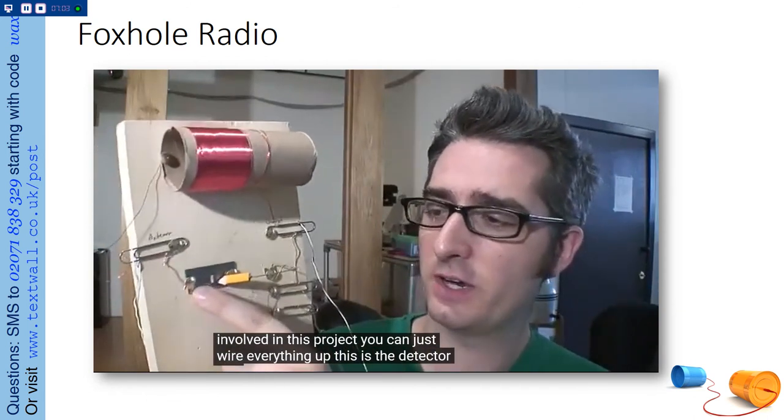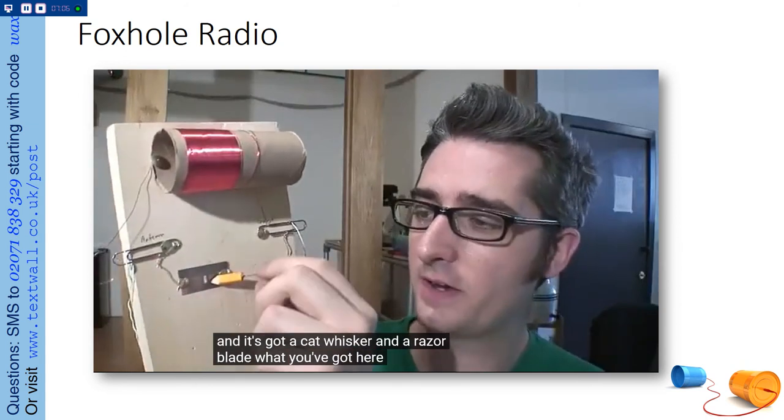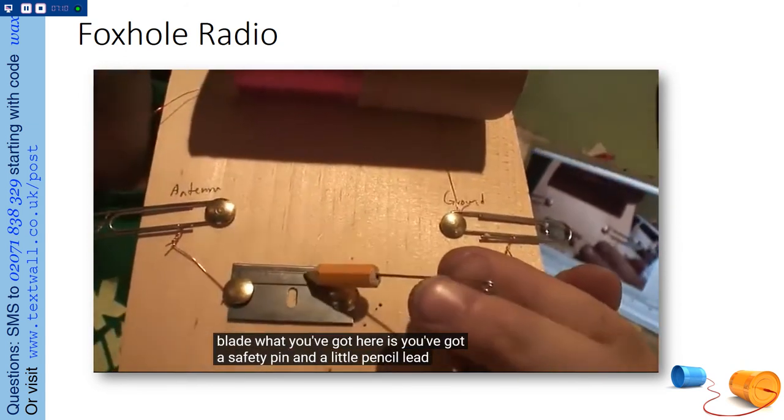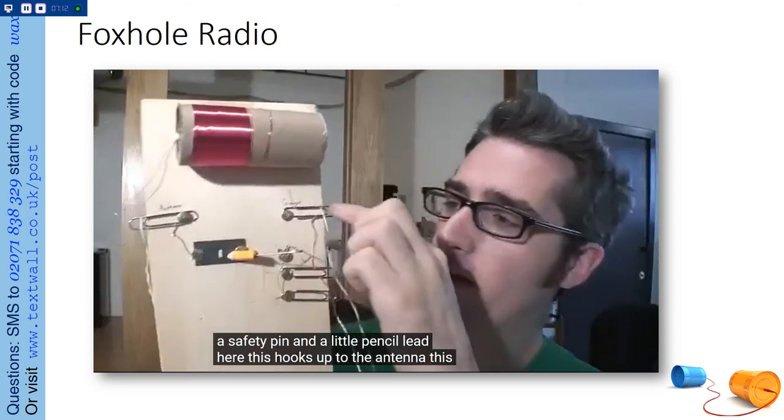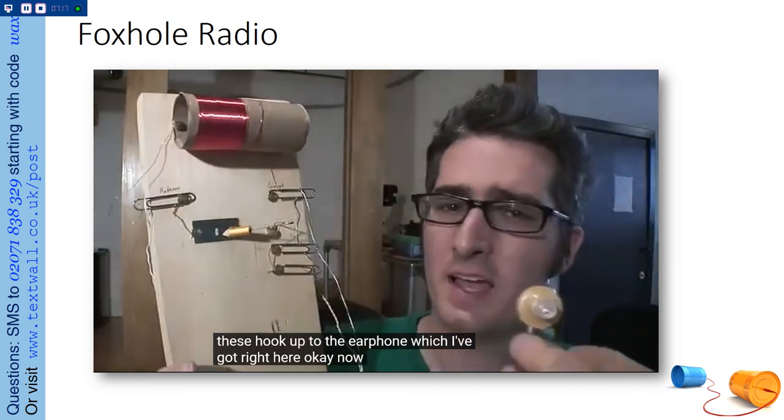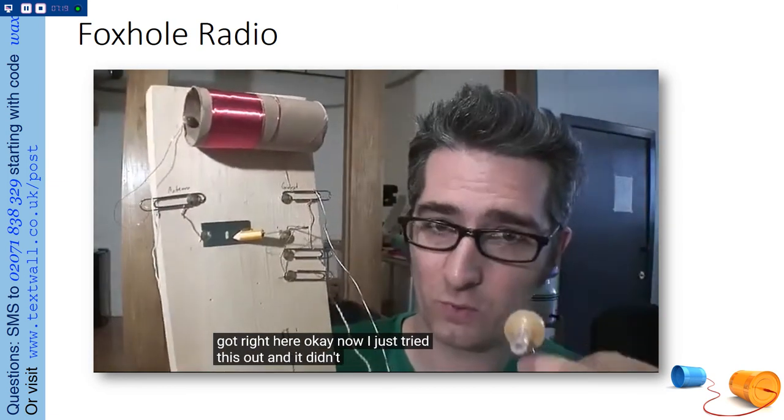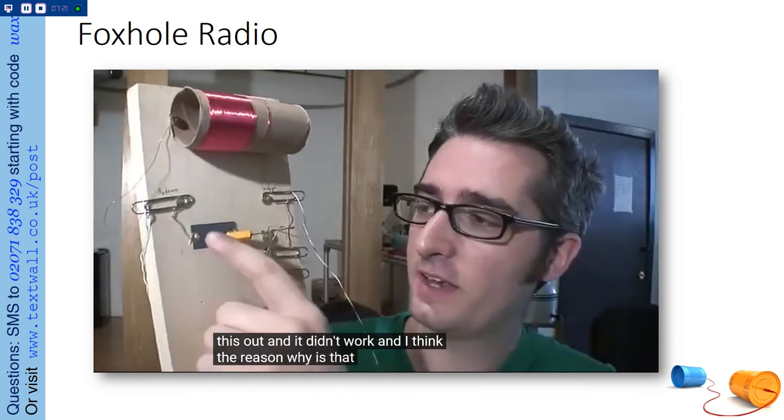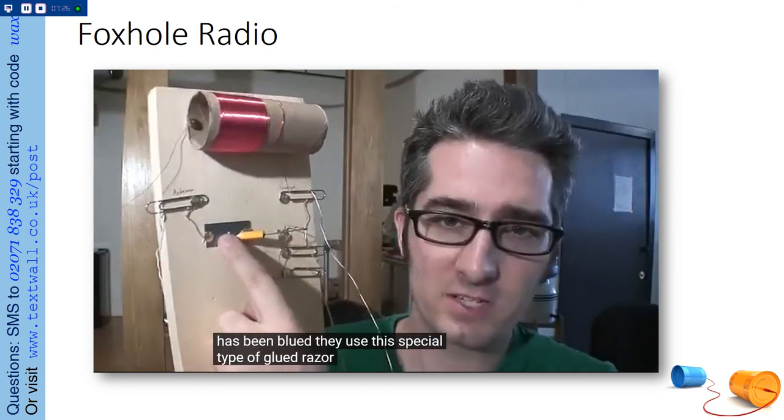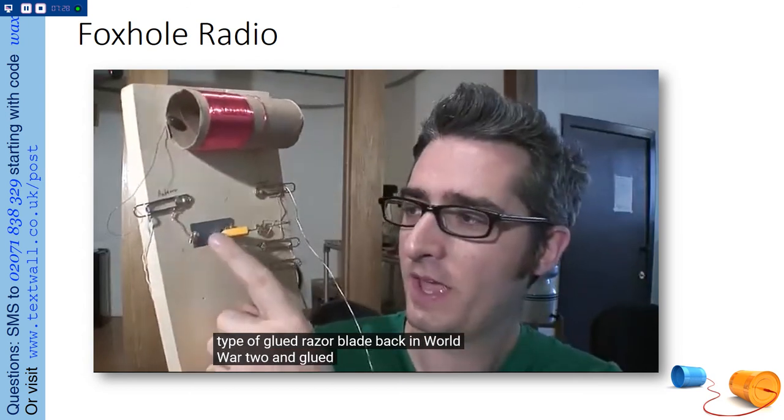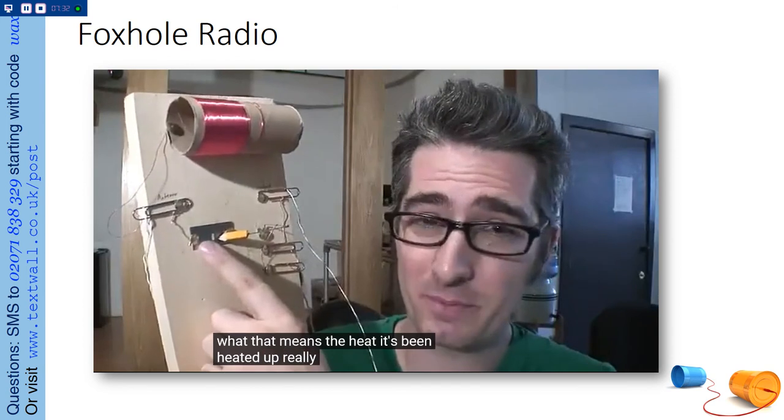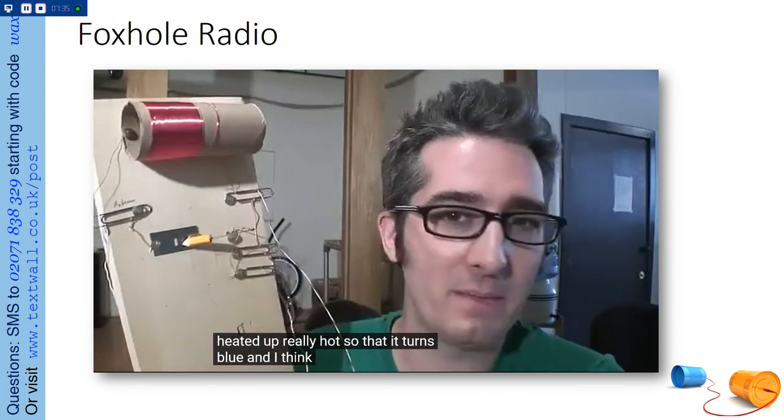This is the detector, and it's got a cat whisker and a razor blade. What you've got here is you've got a safety pin and a little pencil edge here. This looks up to the antenna. This looks up to the ground. These look up to the earphone, which I've got right here. Okay, now I just tried this out, and it didn't work. And I think the reason why is that this razor blade has been glued. They used this special type of glued razor blade back in World War II. And glued razor blades, basically what that means is that it's been heated up really hot so that it turns...